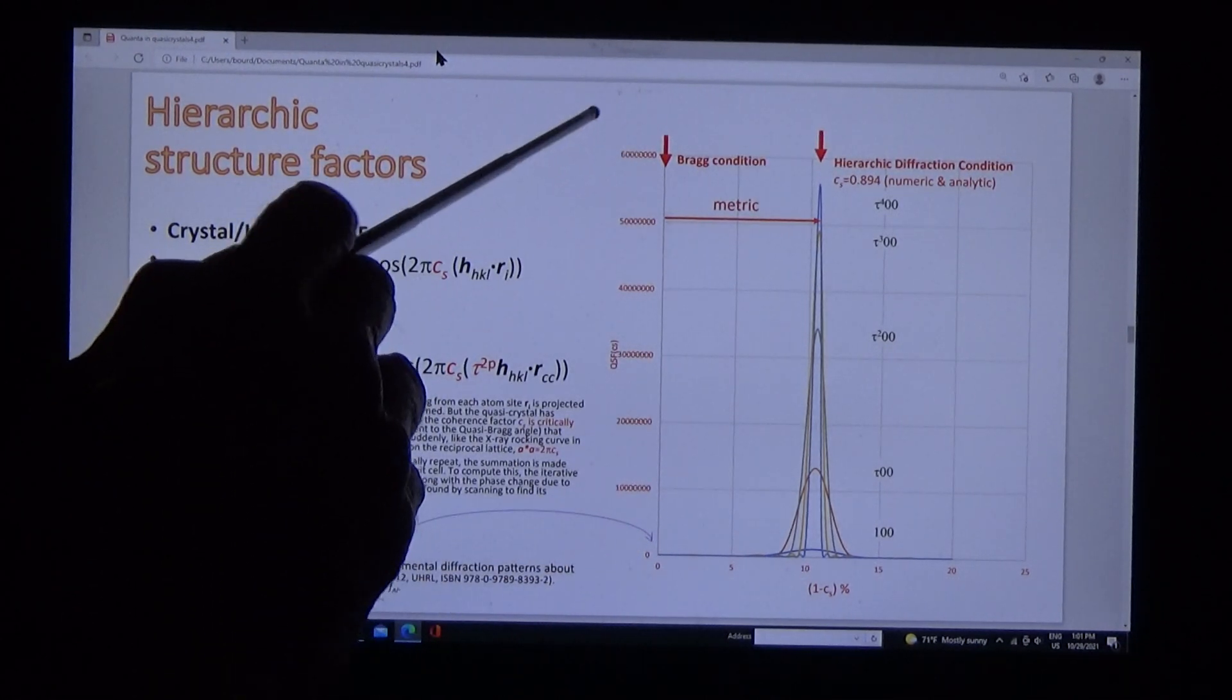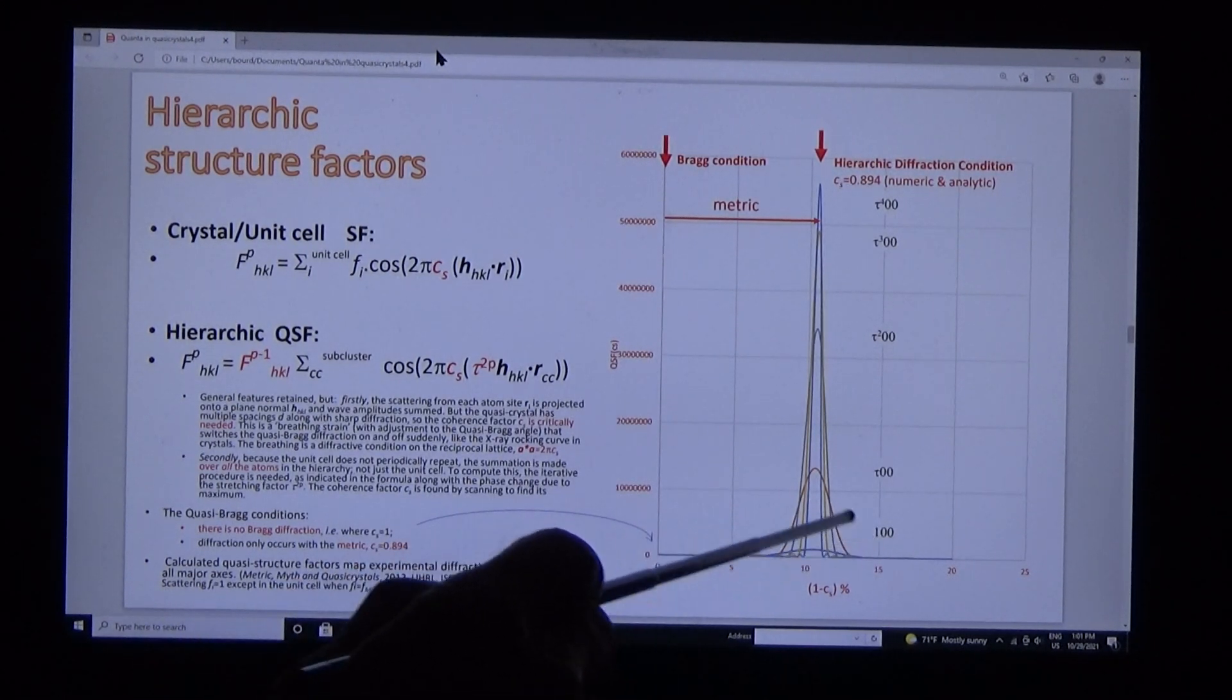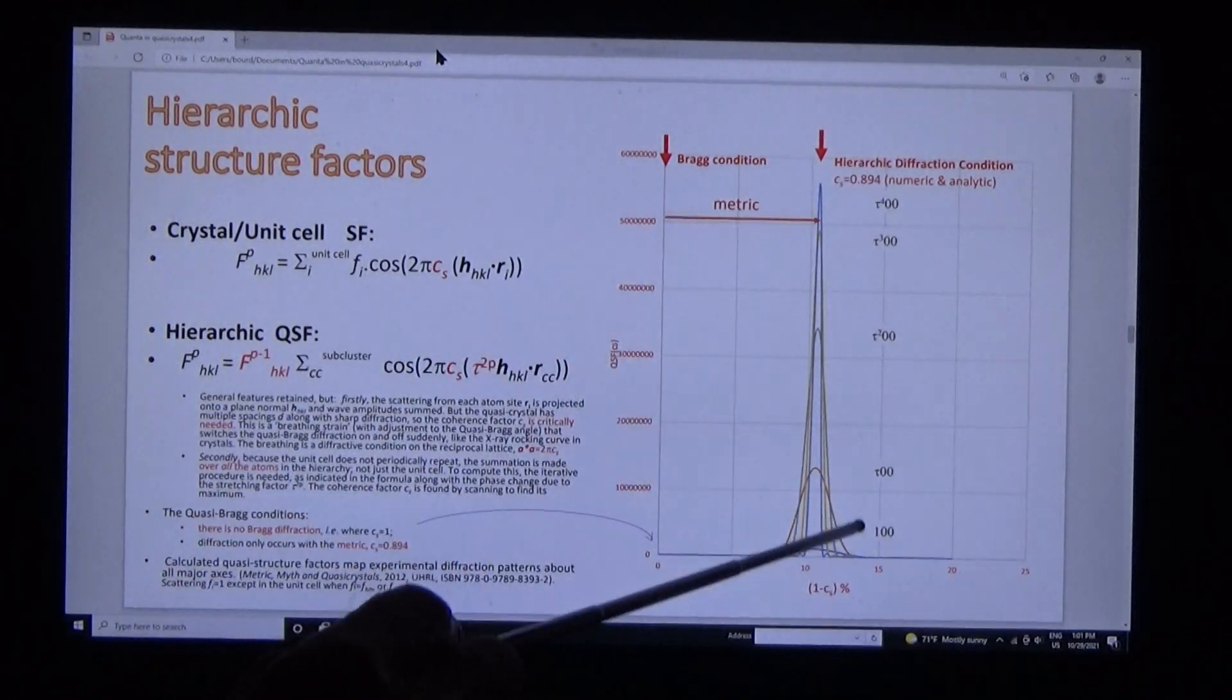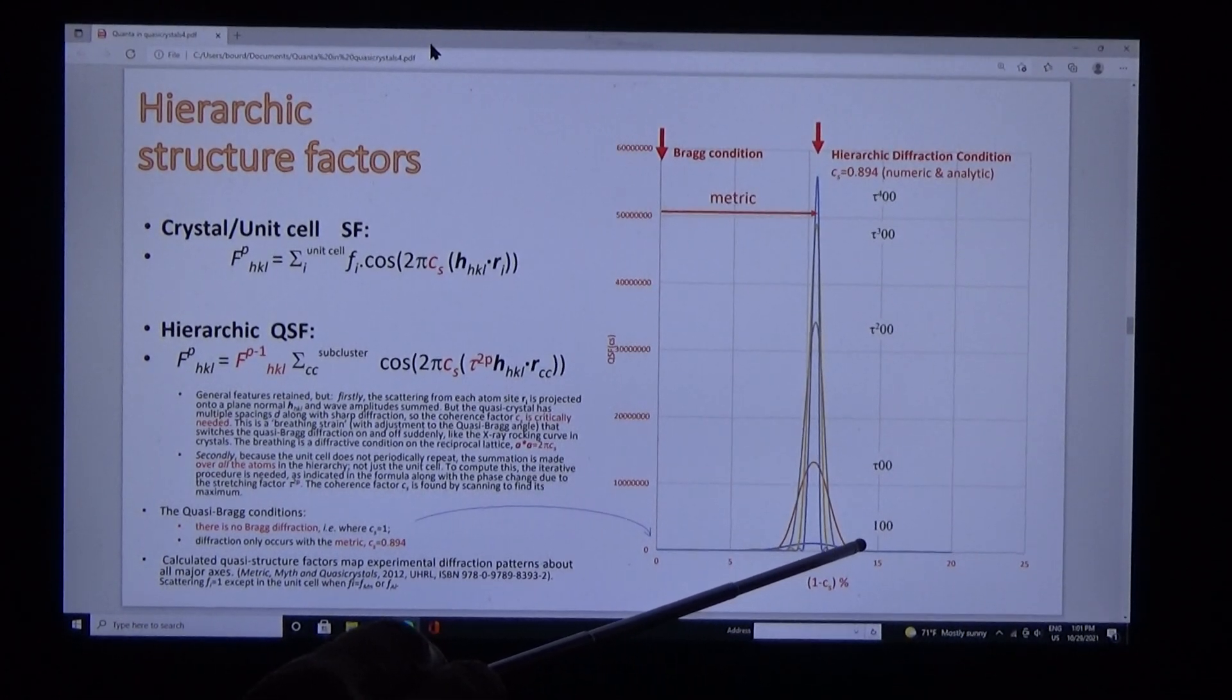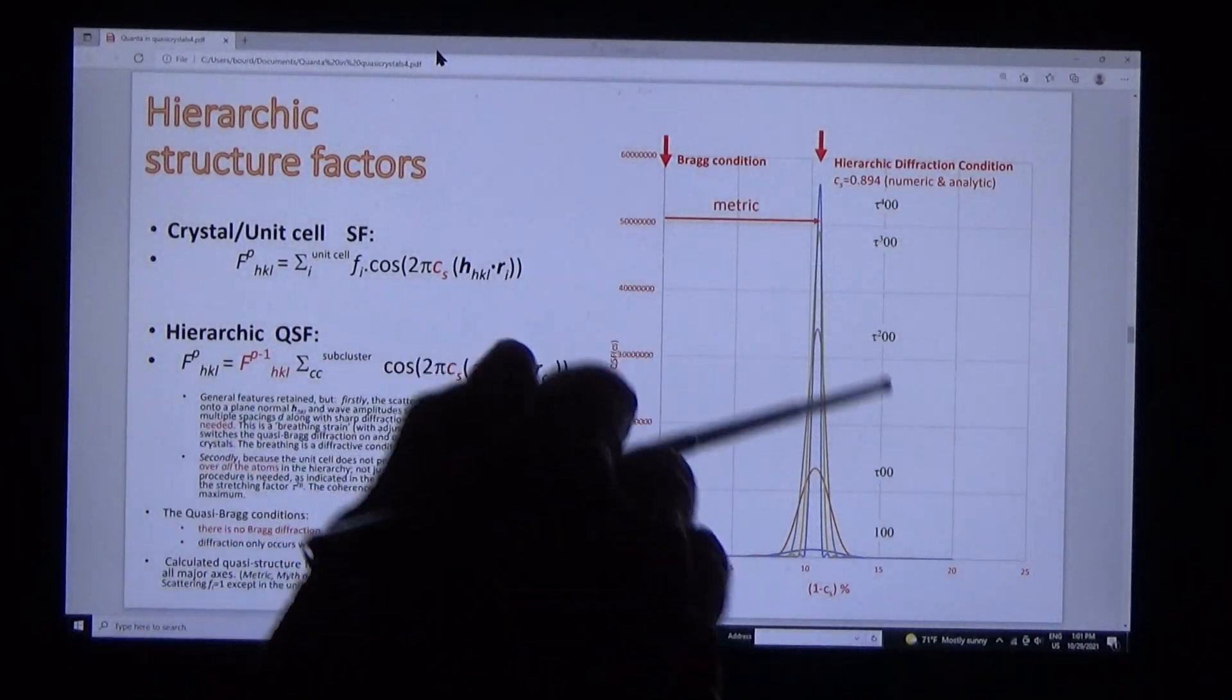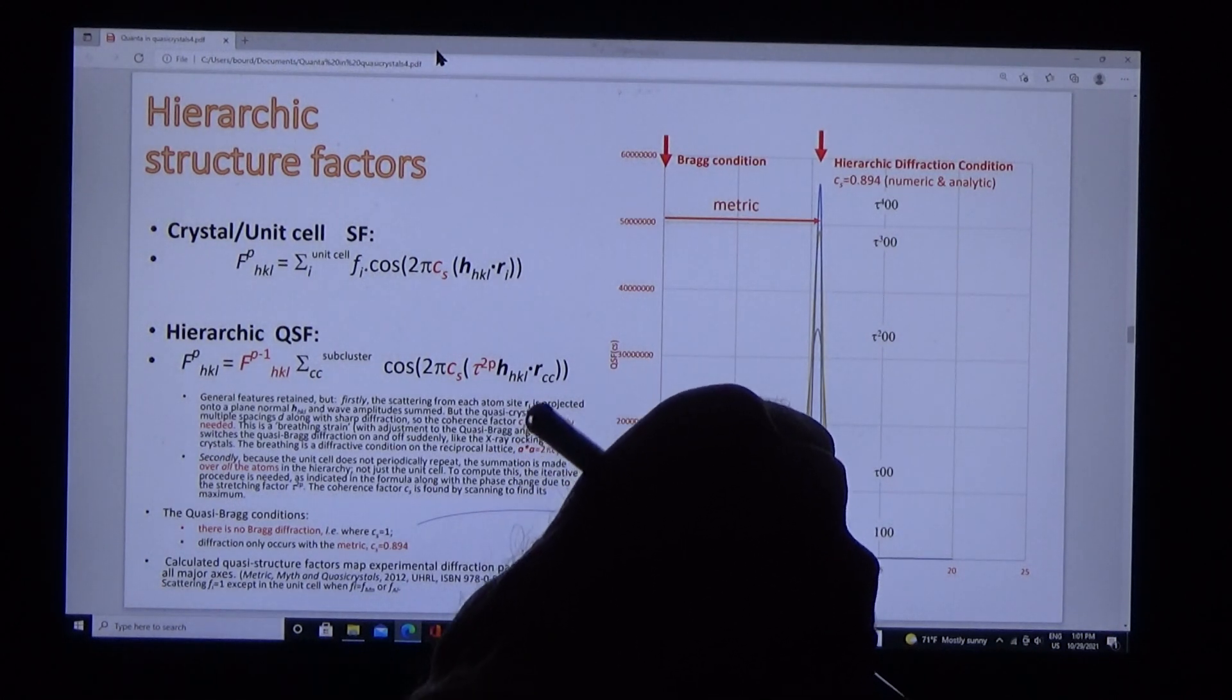What is the answer? There is no Bragg diffraction. If there were Bragg diffraction, it would occur on the ordinate axis with Cs equals 1. But when we scan Cs, we find the quasi-Bragg beam. It's the same for the five beams we pointed out earlier and for all the beams in the original data. That's why we call it a metric.